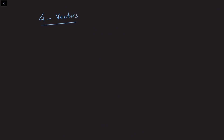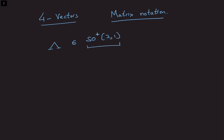In the last class we saw how to write the transformations for four-vectors using what is called matrix notation. In matrix notation we took a matrix lambda which is an element of the Lorentz group. For proper orthochronous Lorentz transformations it belongs to the set of matrices SO⁺(3,1), that is matrices satisfying the property lambda-transpose dot g dot lambda equals g, with determinant of lambda equal to plus one and the zero-zero component of lambda greater than or equal to zero.